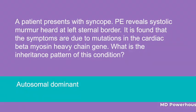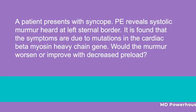A patient presents with syncope and a systolic murmur at the left sternal border due to mutations in the cardiac beta-myosin heavy chain gene. Would the murmur worsen or improve with decreased preload? The murmur would worsen with decreased preload.